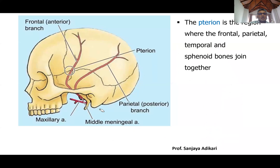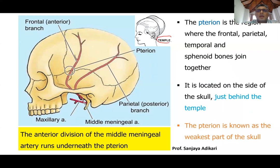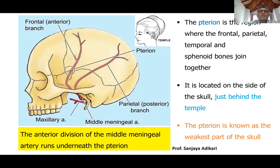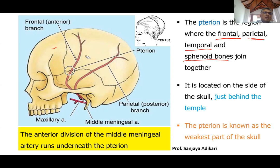The pterion is located immediately behind your temple — behind your eye. At the pterion, four bones unite: the frontal bone, the parietal bone, the temporal bone, and the greater wing of the sphenoid. Because all four bones meet here, it becomes the weakest point of the skull. After a head injury, if you feel a boggy mass — a soft swelling — in that area, the doctor should suspect a fracture of the pterion.